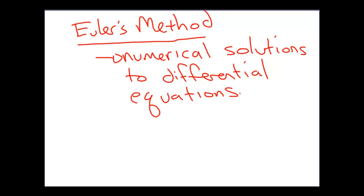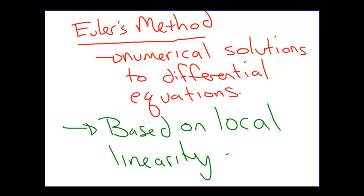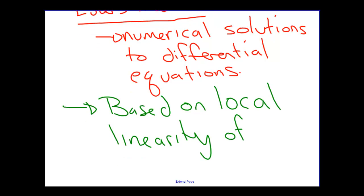In fact, Euler's method brings us back to some material we saw in chapter 4. Euler's method is really based on the idea of local linearity of differentiable functions. Recall that we used linearization in chapter 4 to approximate the values of functions.